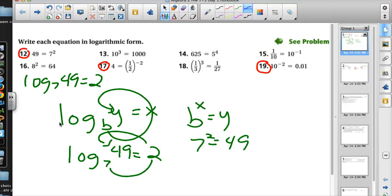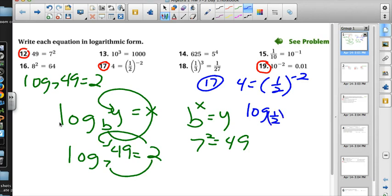The next one is number 17, and 17 is 4 equals 1 half to the negative 2. Using that same process, I have a base that needs to be raised to a power, and that base is 1 half. The power it has to be raised to is negative 2, and then it has to come out to be 4. If we snail shell this, it's going to say 1 half to the negative 2 equals 4.